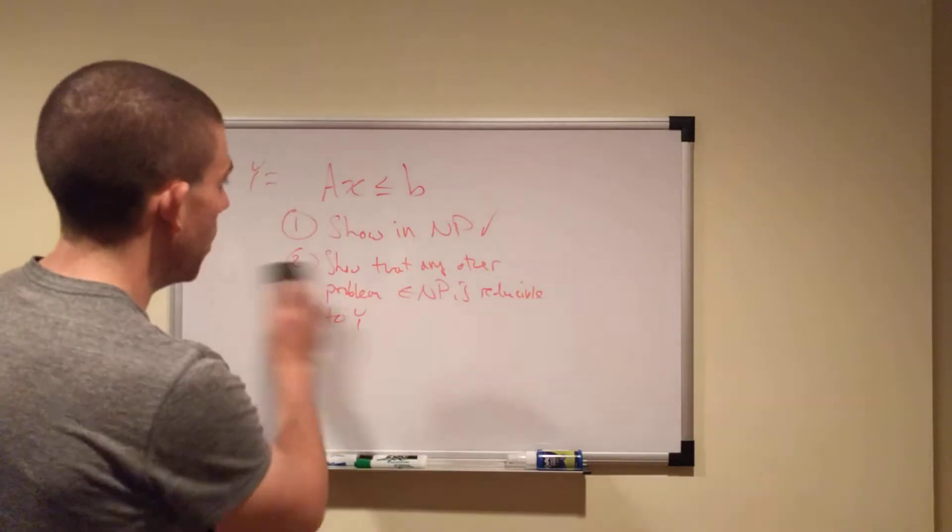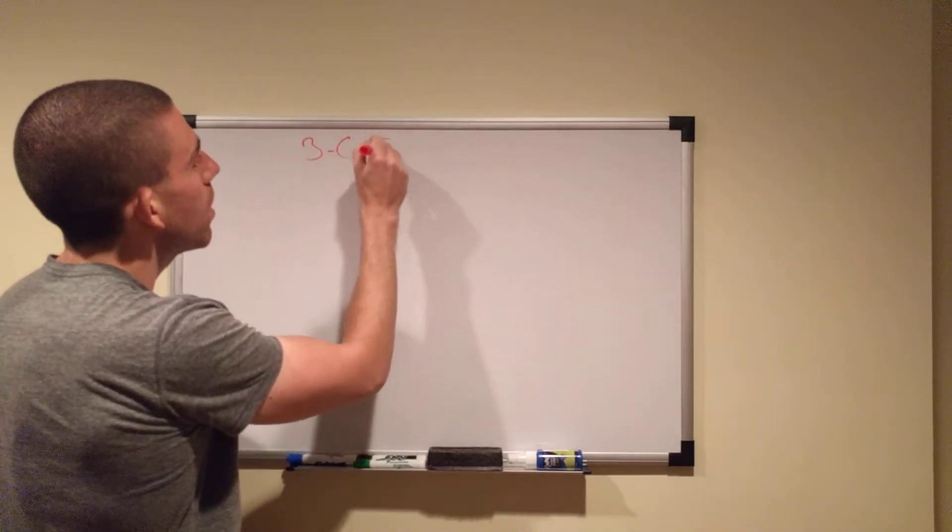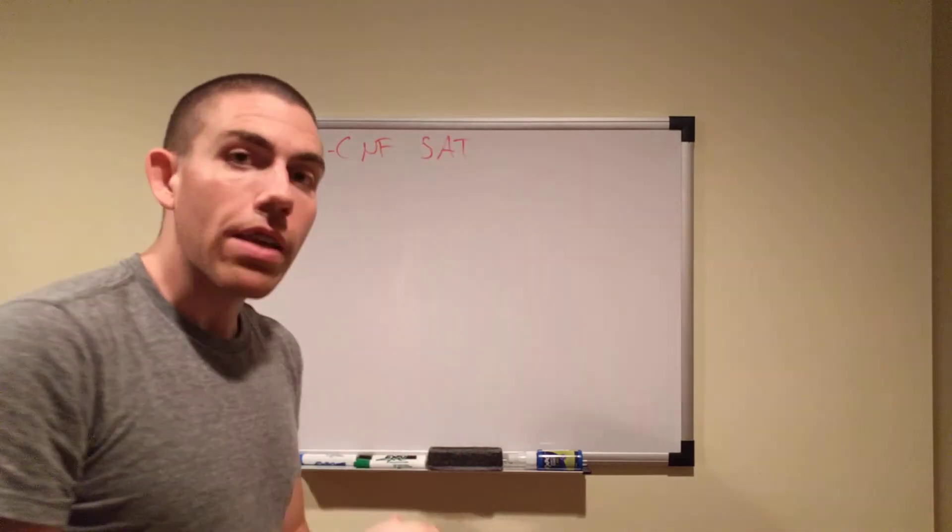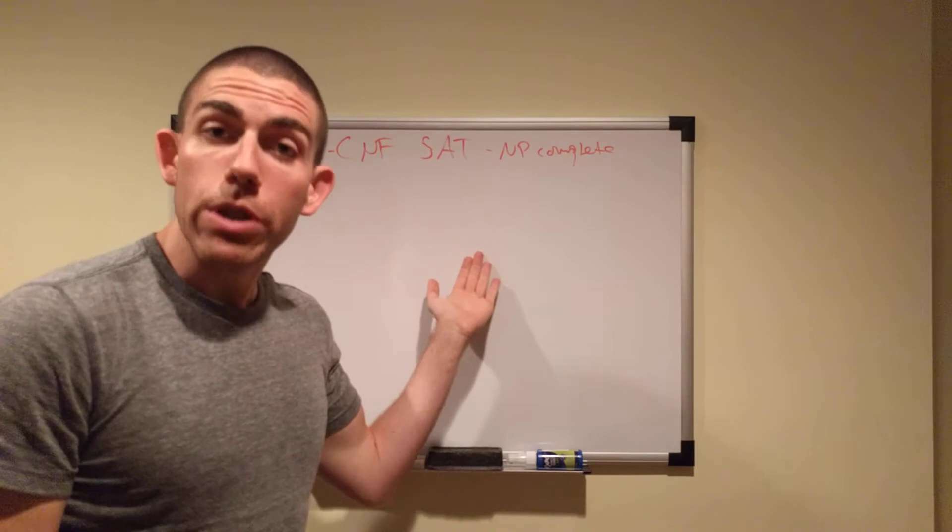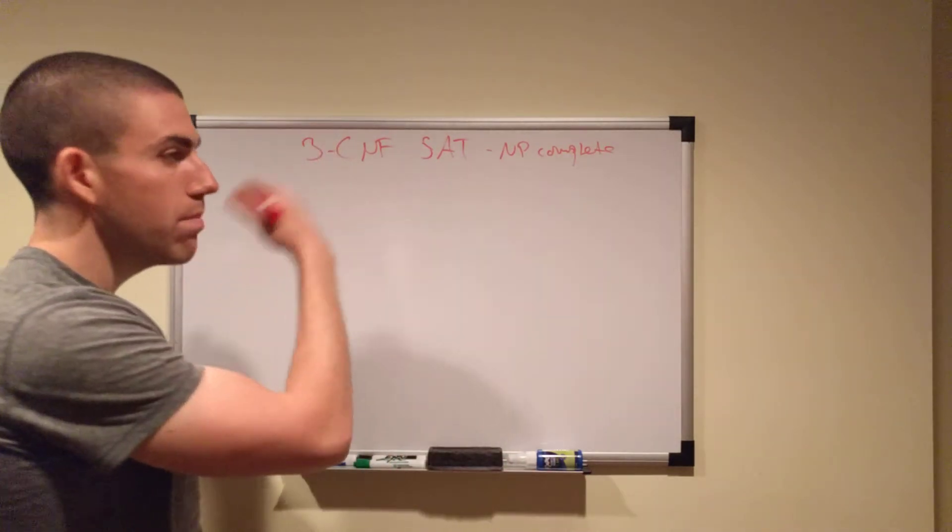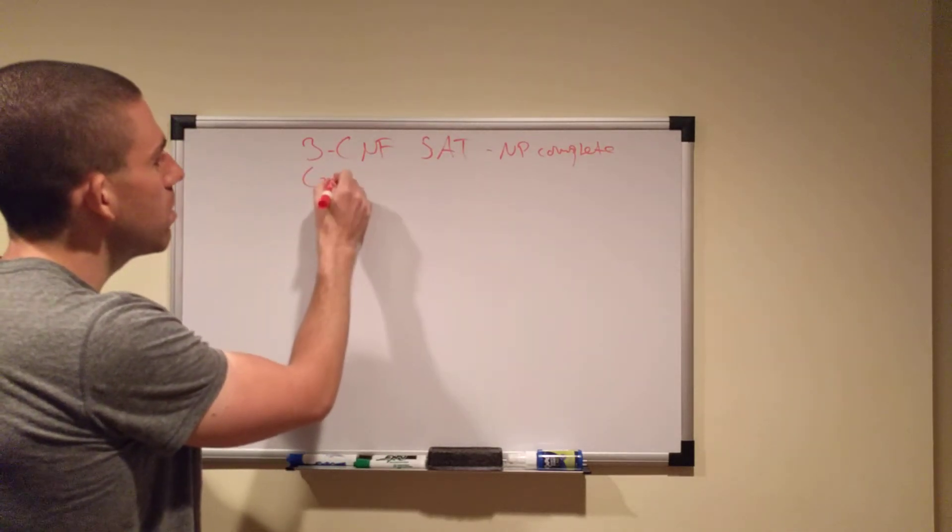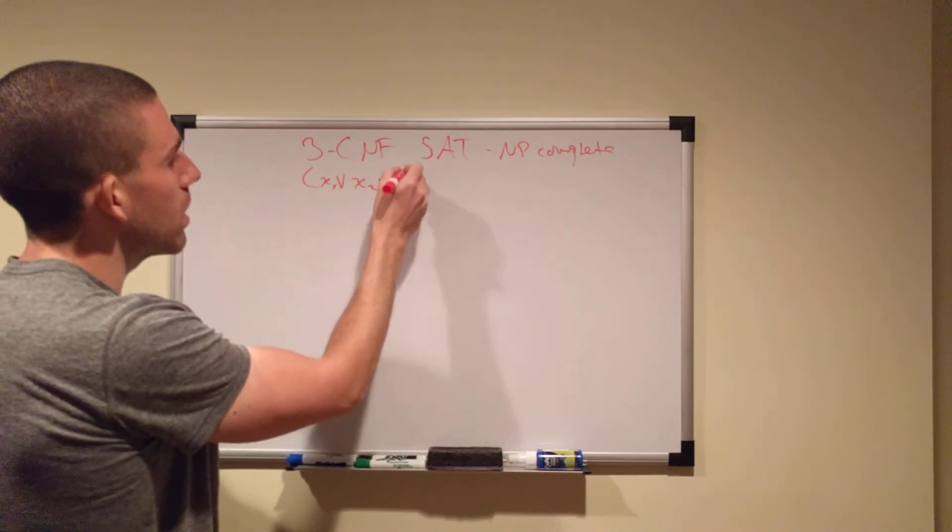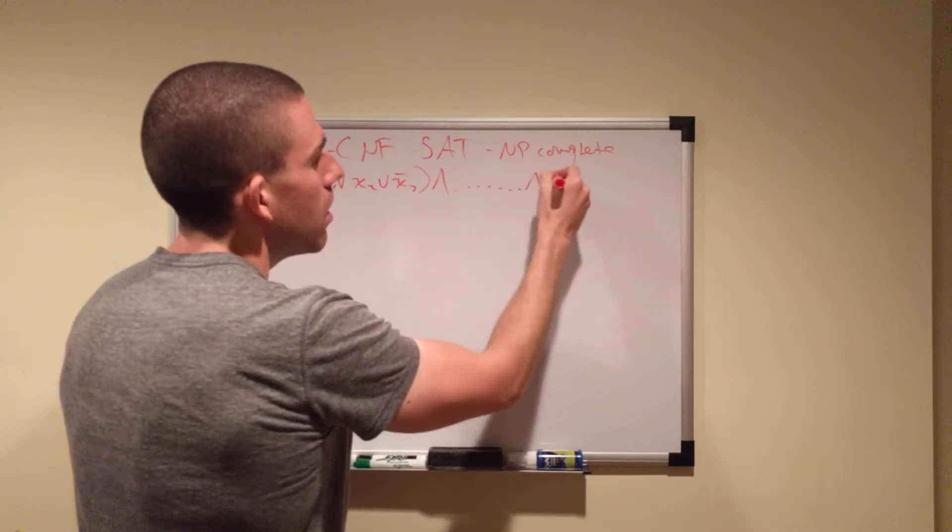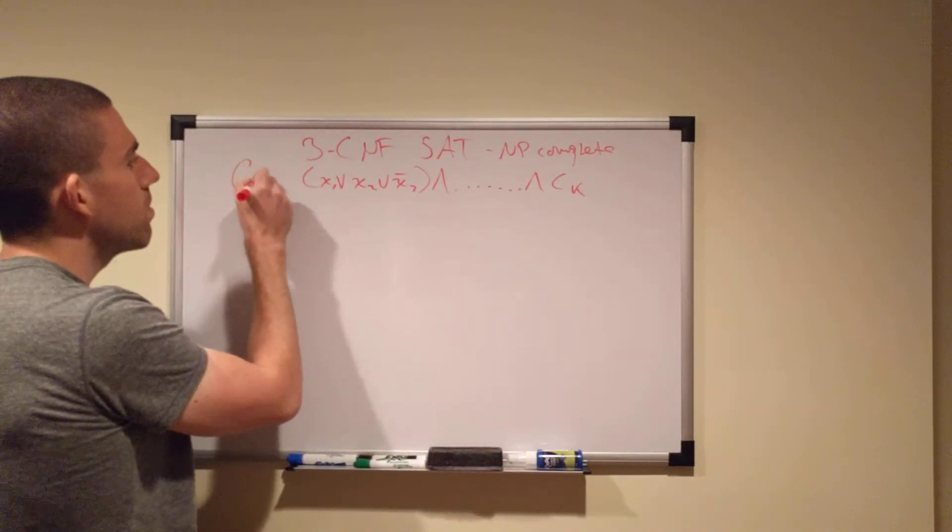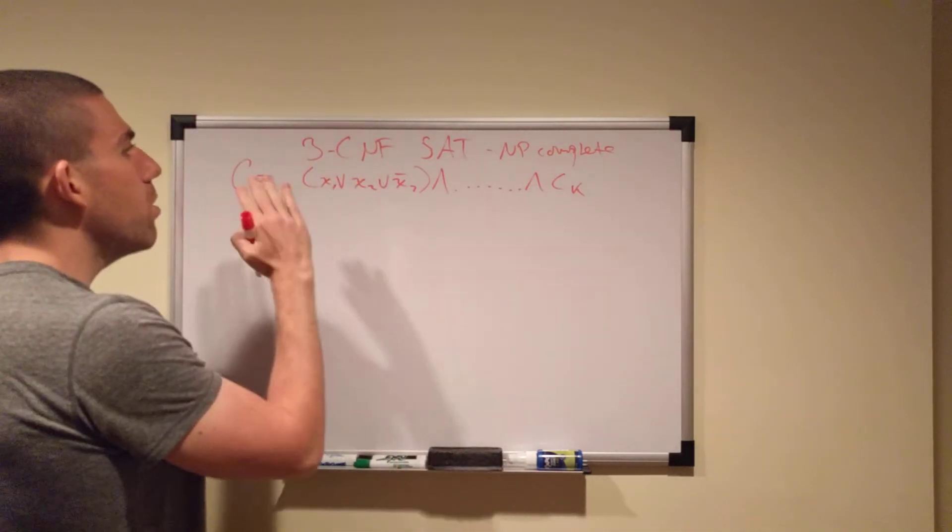In particular, we know that 3CNF satisfiability is NP complete. We know that much. So let's say that we have, let's start from the beginning. Let's say that we have some clause in the beginning, x1 or x2 or x3 complement, and so on, up to CK. We'll just call this C, some set of clauses in the conjunctive normal form.